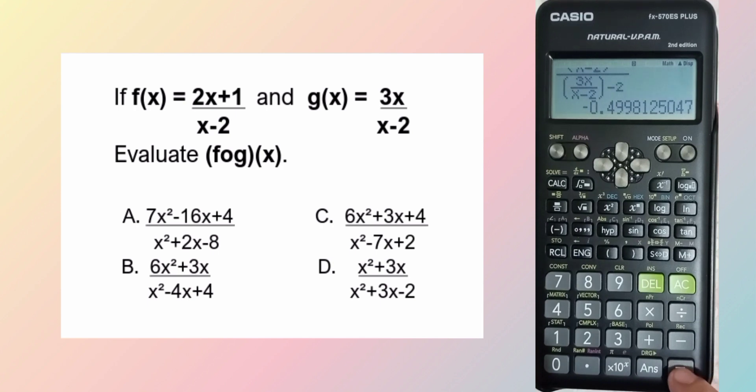Negative 4 point, negative 0.4998. No, no. And it's letter A. Finally, done.